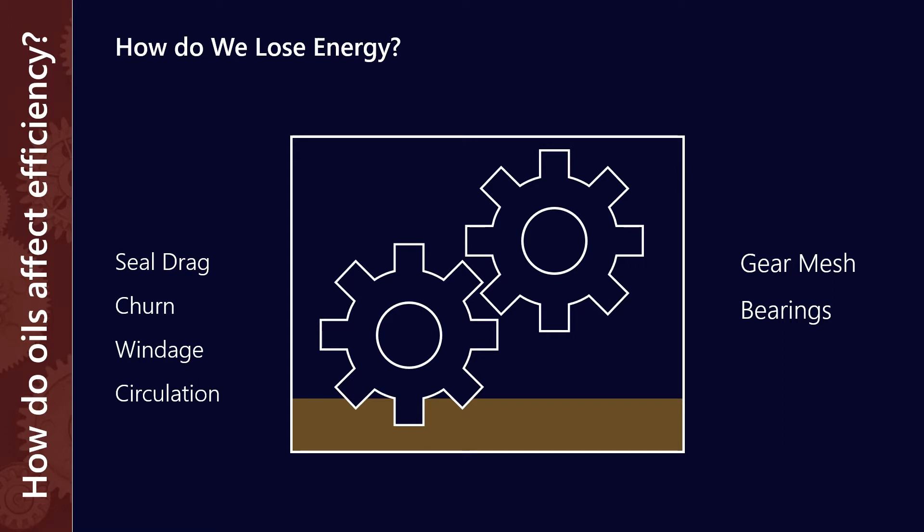For example, if the shafts are running on rolling element bearings, then we have the physical movement between the rolling elements and the inner or outer race. Now, we separate these two into what is effectively speed-dependent and load-dependent losses.